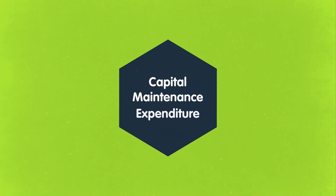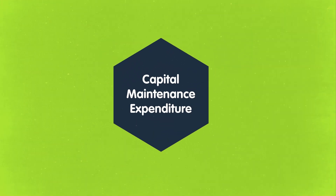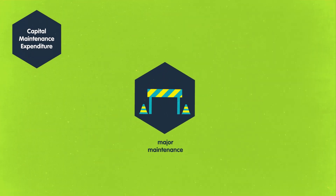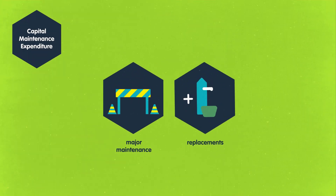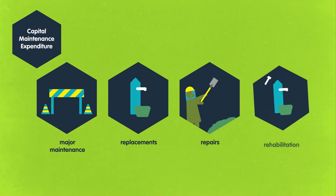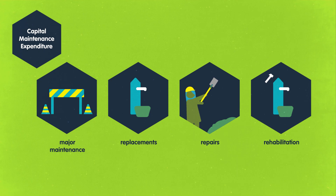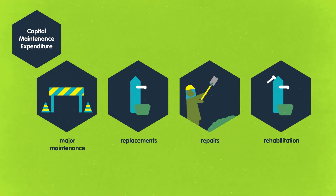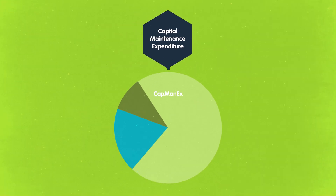Capital maintenance expenditure, or CAPMANEX, refers to expenses for major maintenance, replacements, repairs — rehabilitation costs are also included here.